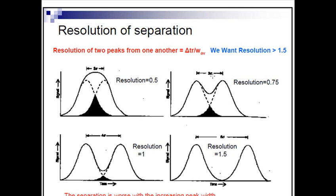Let us talk about the resolution of a separation. Resolution of two peaks from one another is the resolution of the separation. Whenever we have distinct peaks to be isolated, we can say that the separation between two different analyte molecules is greater when peaks are more distinct. When resolution is getting lower, the peaks are merging with each other. When you find a distinct peak, that means the resolution is good, or the separation is good.